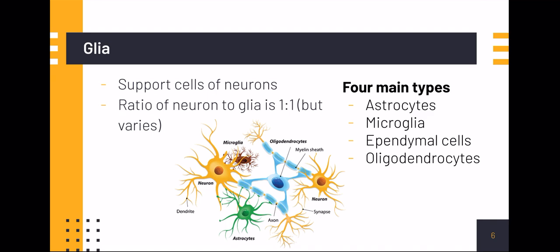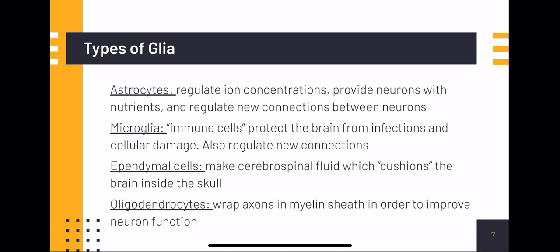Astrocytes are named because of their star-like structure. They regulate ion concentrations, provide neurons with nutrients, and regulate new connections between neurons. Microglia are also known as immune cells — they protect the brain from infections and other cellular damage, and they also regulate new connections. Ependymal cells make cerebrospinal fluid, which cushions the brain inside the skull. Oligodendrocytes wrap axons in myelin sheath in order to improve neuron function.